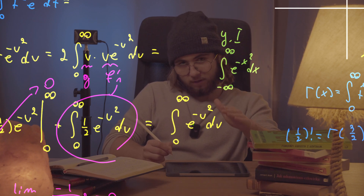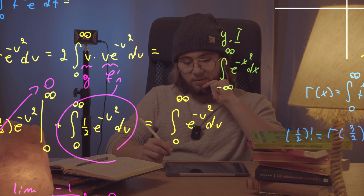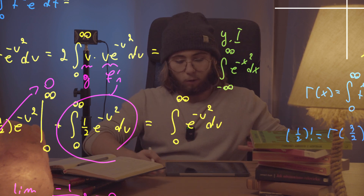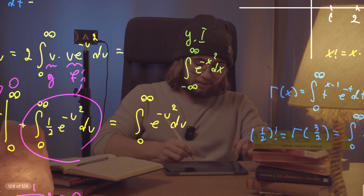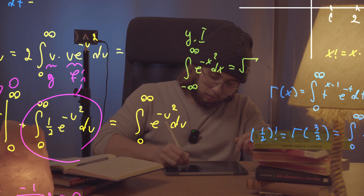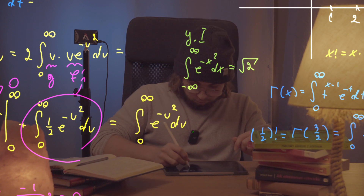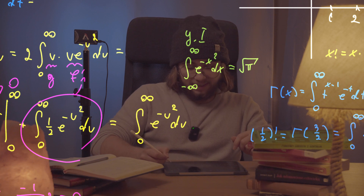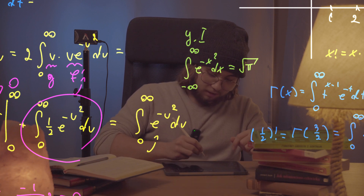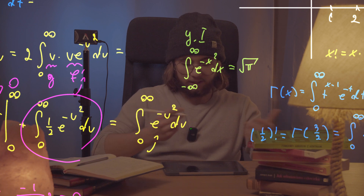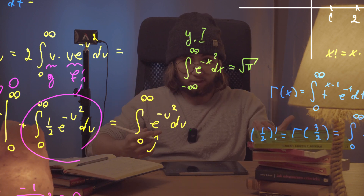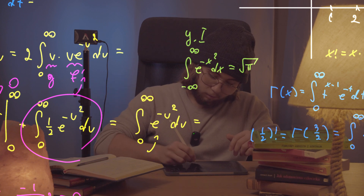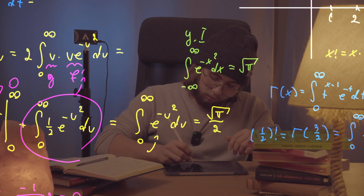I'm not going to calculate the Gaussian integral right now because I want to make a separate video on it, coming next week. But this integral is equal to the square root of pi. Since e to the negative u squared is an even function, symmetric with respect to the y-axis, the integral from zero to infinity is equal to the square root of pi over two.